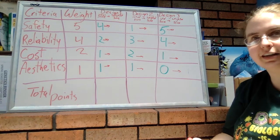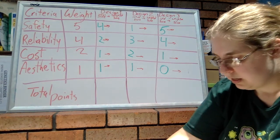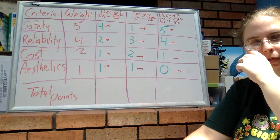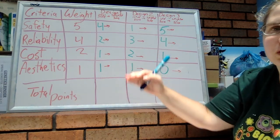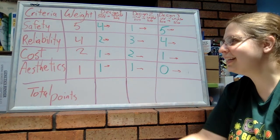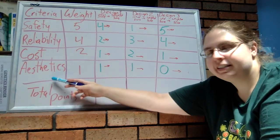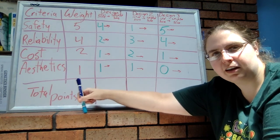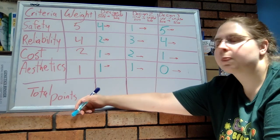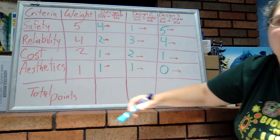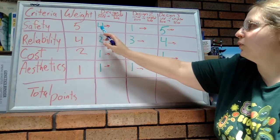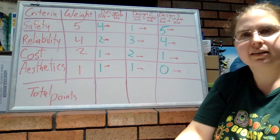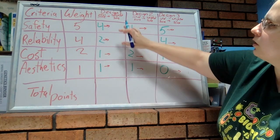Now what we want to do at this point is—these were just initial scores, but remember we said that these criteria, some of them we consider more important than others, and that's where the weights come in. What we are going to do is multiply our initial score by the weight of that category.